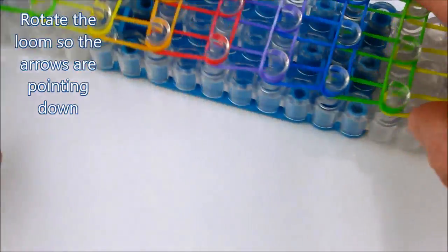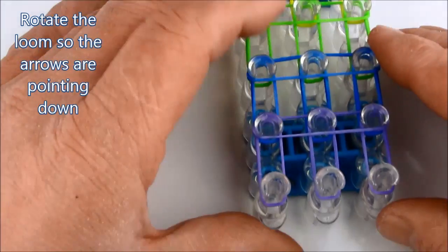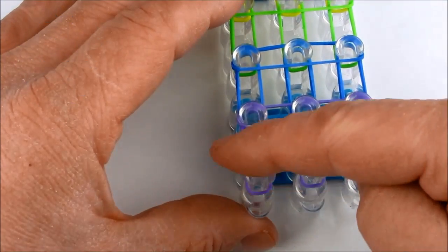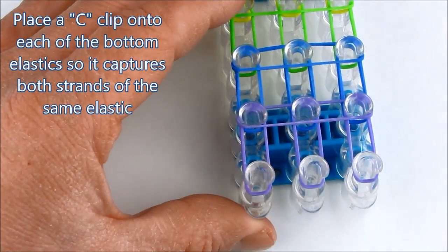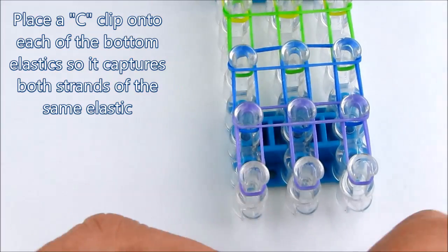We rotate the loom so that the arrows are pointing down and place the c-clips on each bottom elastic so it captures both strands of the same elastic.